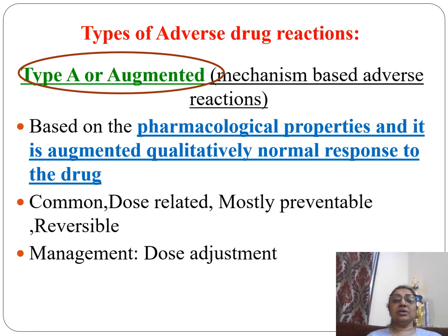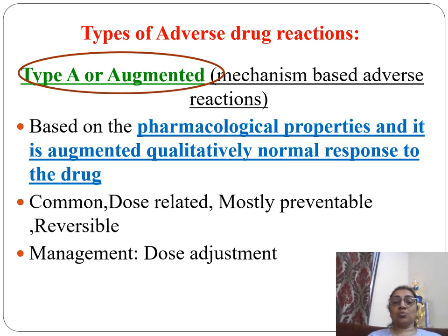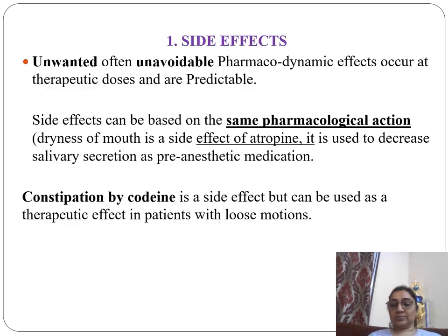Type A, or augmented, adverse effects depend on the mechanism of action of the drug based on its pharmacological properties. It is a qualitatively normal but augmented response to the drug. It is common, dose-related, mostly preventable and reversible, and is managed by dose adjustment.